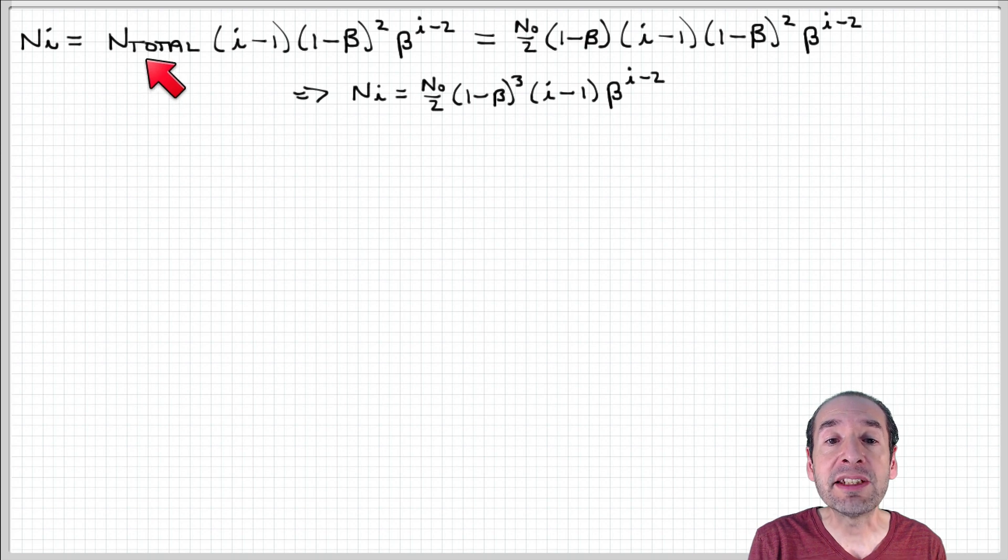We just obtained an expression for N total in terms of the product N naught over 2 times 1 minus beta, where N naught is the total number of polymerized monomers in the system. So now with this substitution, we can obtain an expression for Ni equal to N naught over 2 times 1 minus beta cubed times i minus 1 times beta to the i minus 2.